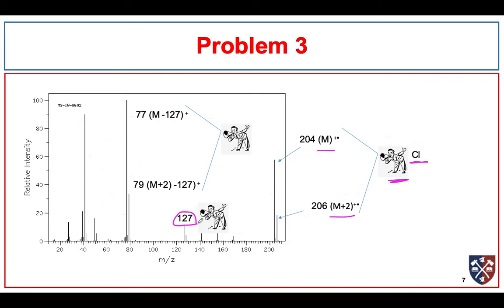We also see a peak at 127 — we often see an iodine peak at 127. If we think we have iodine, we look at M minus 127, and there's a big absorption there, which is also usually a prominent peak in compounds containing an iodine atom. Furthermore, the M minus 127 and M+2 minus 127 peaks mean chlorine is still attached to that fragment — it probably just lost the iodine. So our compound has a chlorine and an iodine, with a molecular mass of 204 or 206.